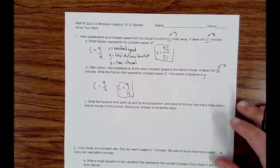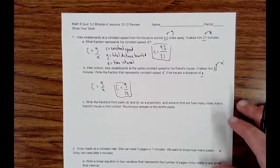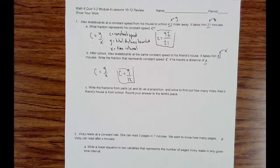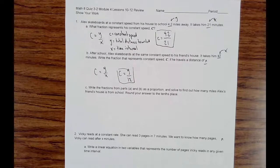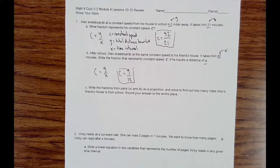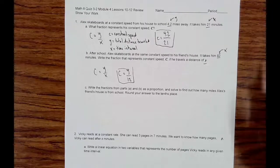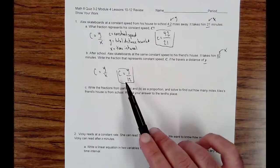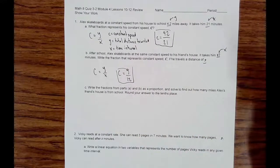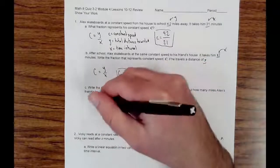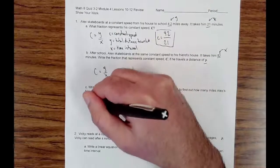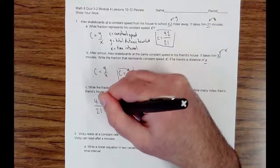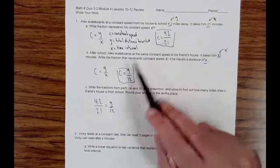All right, so that is the second part. And 1C says to write the fractions from part A and part B as a proportion and solve to find out how many miles Alex's friend's house is from school. It says round our answers to the nearest tenth place. So what we're going to do is we're going to take the two things we solved here. This C equals 4.2 over 21 and the C equals Y over 12, and we're going to set them equal to each other. So we're going to put here 4.2 over 21 is equal to Y over 12. Because they're both C, we can set them equal to each other.